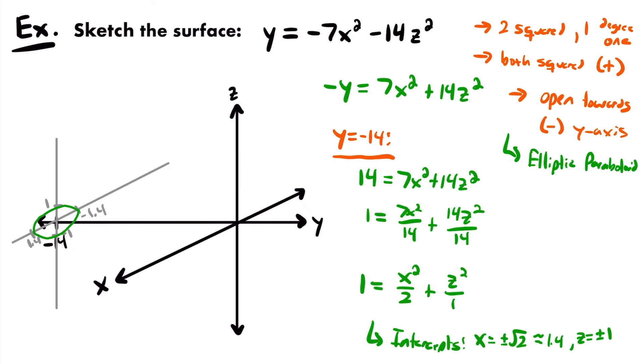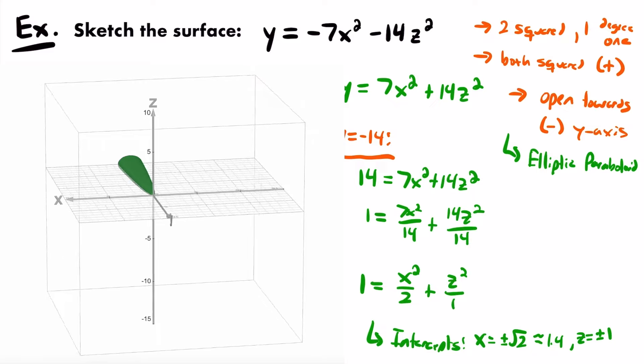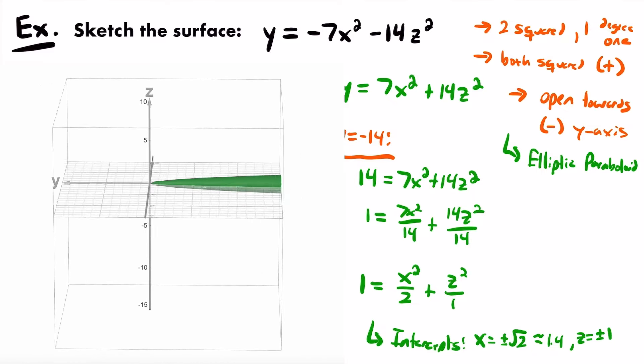Now that we've drawn that ellipse, we can finish off this elliptic paraboloid by drawing a parabola from the ellipse back to the origin. It's going to be pretty skinny — a thin elliptic paraboloid, almost the shape of half a cucumber or half a pickle. Remember this is just a surface, though; there's no volume inside of it. After shading it in, that is our elliptic paraboloid. Here's a 3D render of what that surface looks like in 3D space.